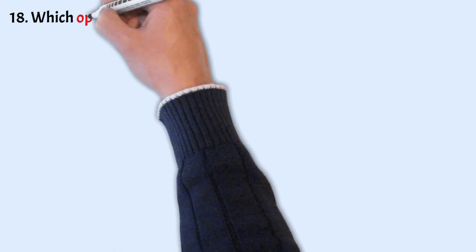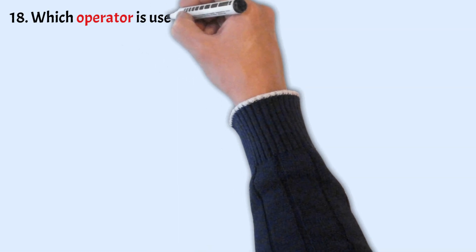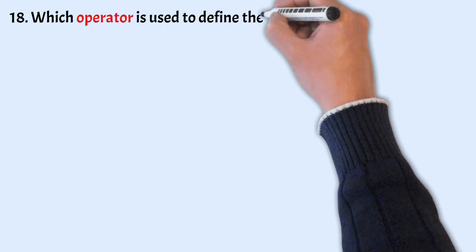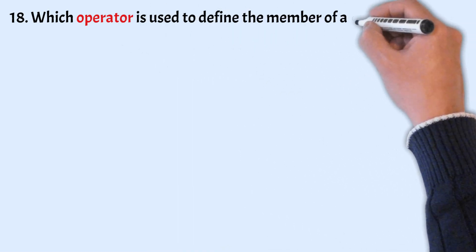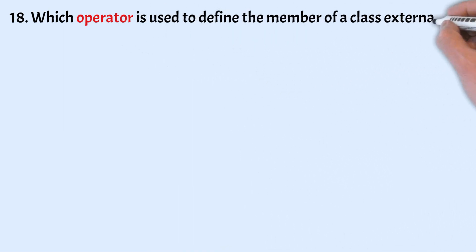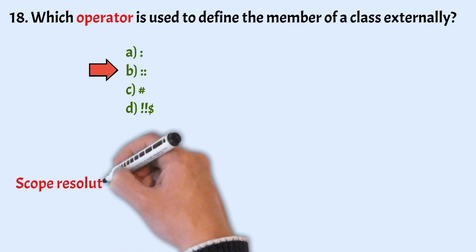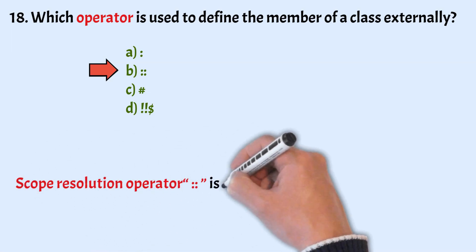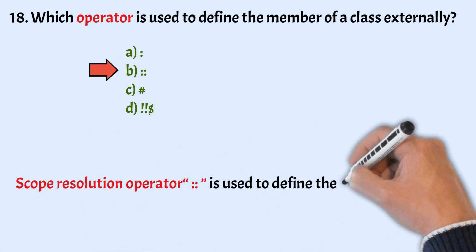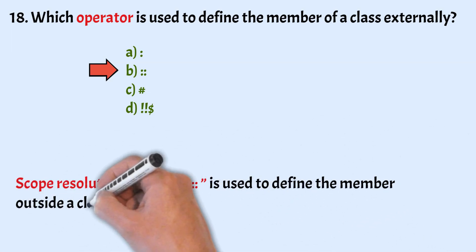Which operator is used to define the member of a class externally? The correct answer is option B. The scope resolution operator is used to define a member outside a class.